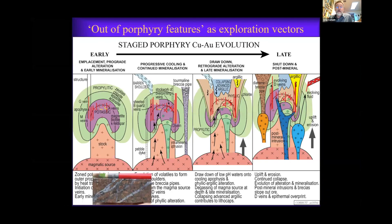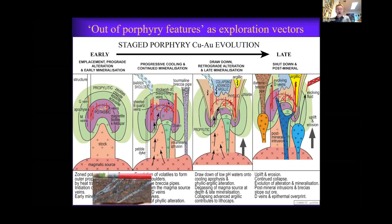In the model for staged porphyry evolution developed with the late Terry Leach as long as 20 years ago, we placed the porphyry as a hypothesis above a magmatic source, which accounts for much of the metals, which are evolved up into that higher level setting using dilatant features such as sheeted quartz veins. So we've put time in the evolution of porphyries.